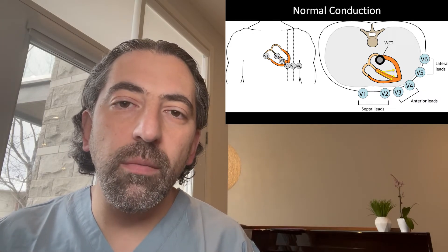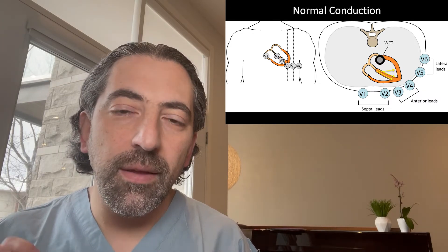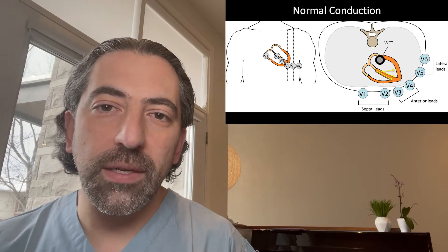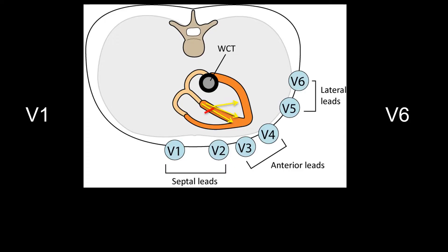When the right bundle branch gets blocked, this changes the normal QRS complex. Depolarization will proceed normally down the left bundle, and because the left bundle inserts its Purkinje fibers into the septum, septal depolarization will still proceed left to right like it does under normal circumstances. So in lead V1 you still get a small r wave, and in lead V6 you still get a small q wave.